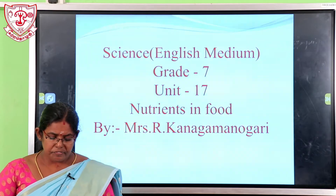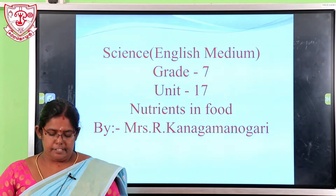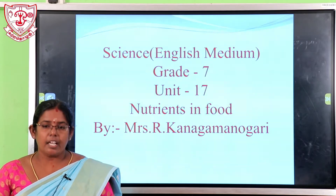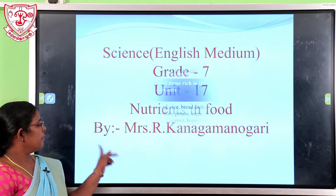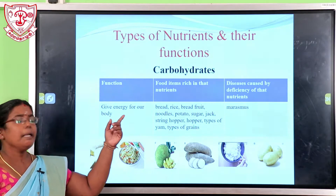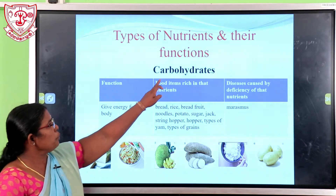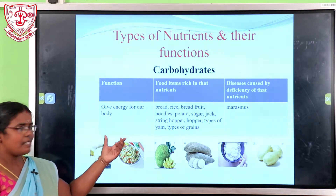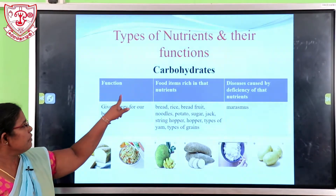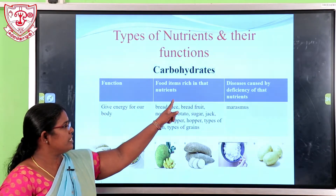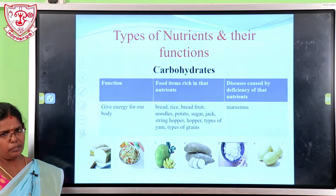There are five main nutrients required by our body and they should be present in the food we eat. Observe the table carefully — it shows the types of nutrition, their functions, the food items rich in that nutrition, and the diseases caused by deficiency of that nutrition.